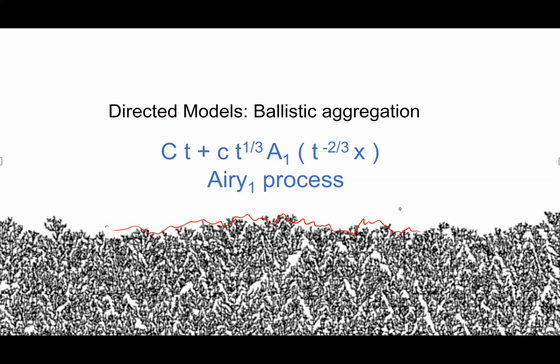There's a new process and what we learn from this is that we're supposed to see a process which depends on the initial data. So the real question is: what are these universal processes that one's supposed to see, and what are their finite dimensional distributions? For ballistic aggregation there are essentially no results.